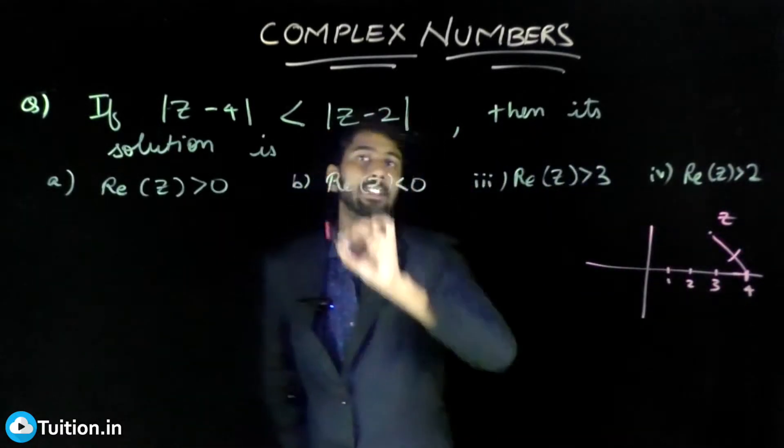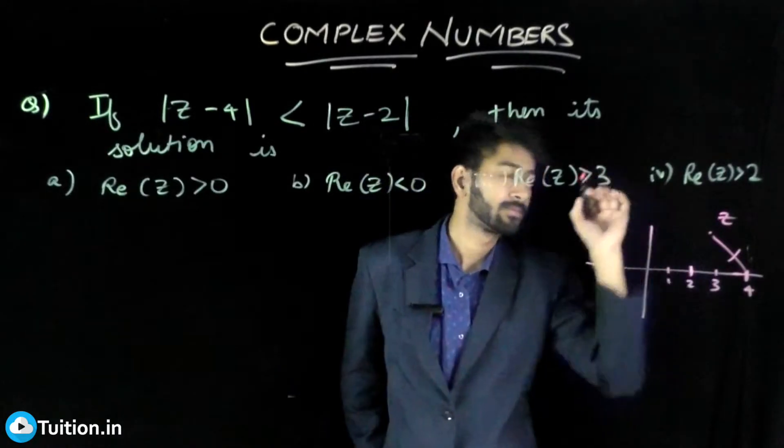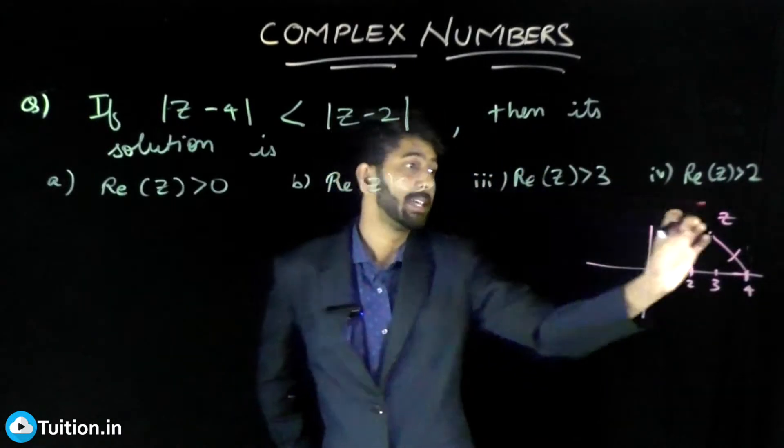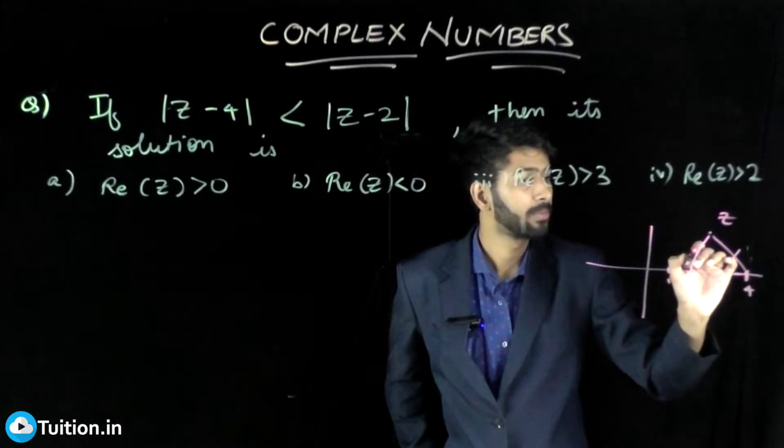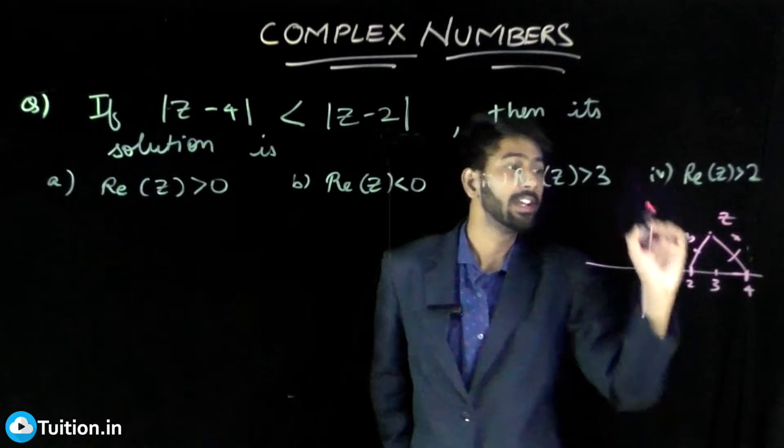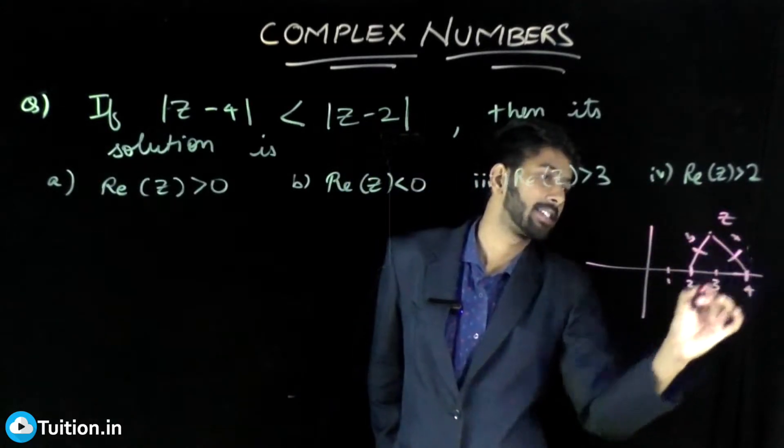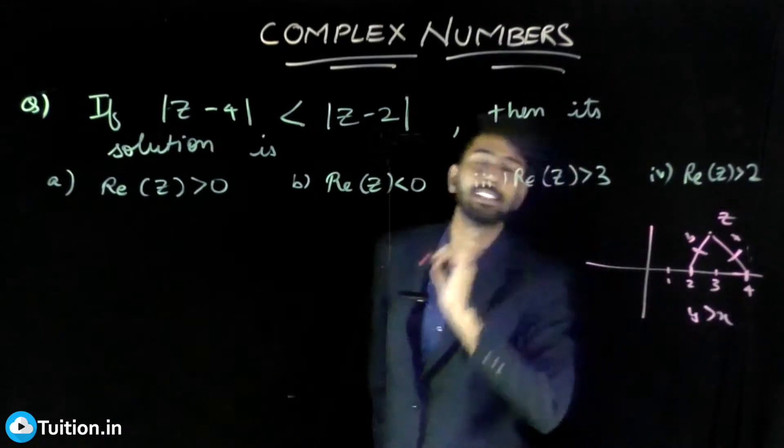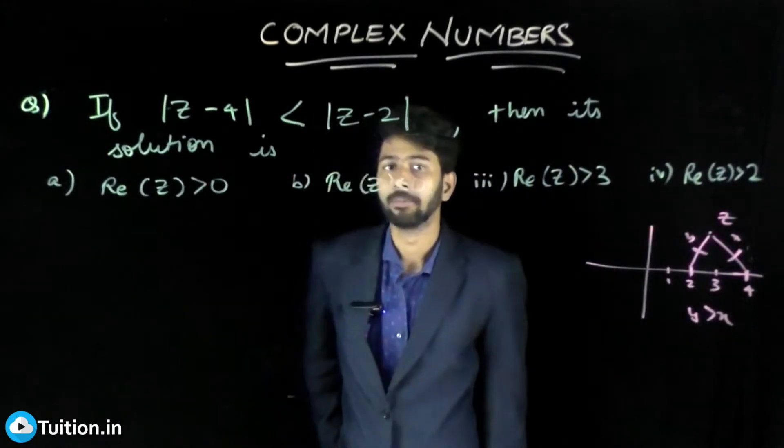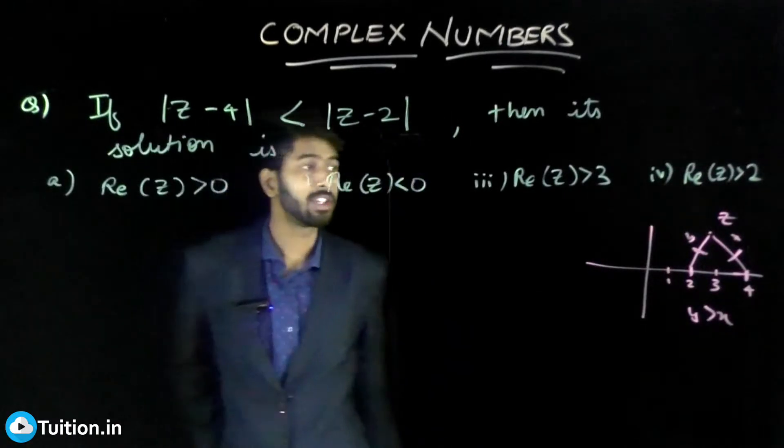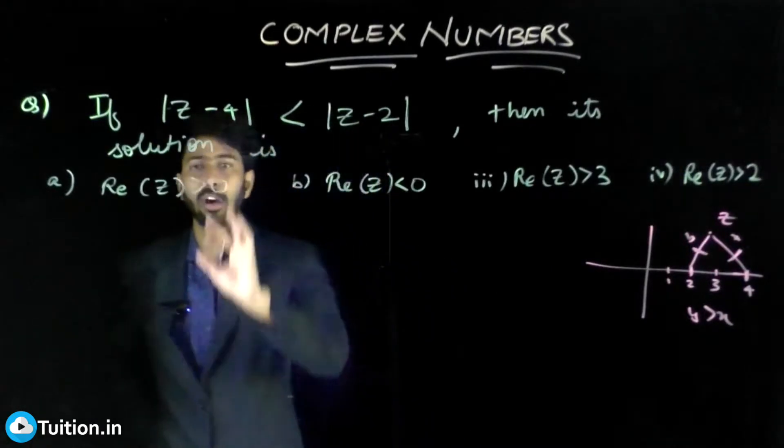And this is Z minus 2, so 2 is here. From the same Z, the distance to 2 is basically your |Z - 2|. Let this be X, let this be Y. The condition here is this length should be greater than this length, so your Y should be greater than X. That's how you visualize this geometrically.